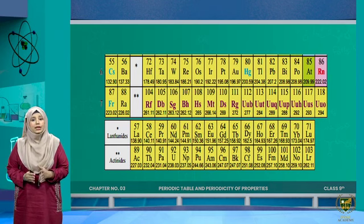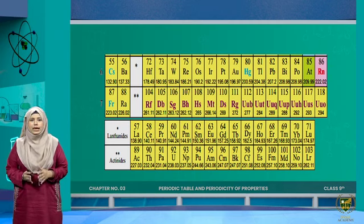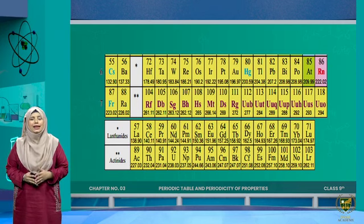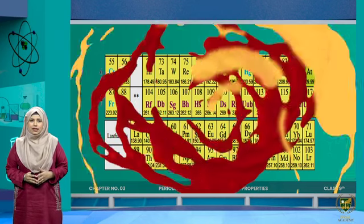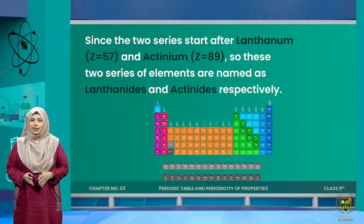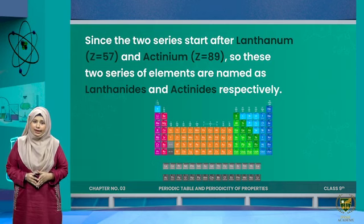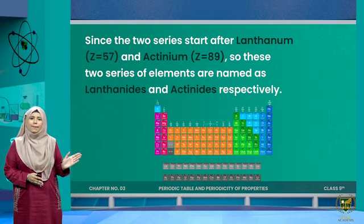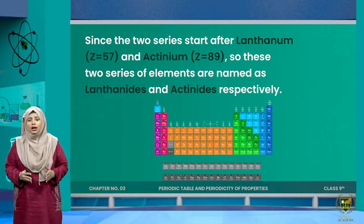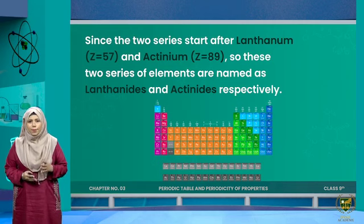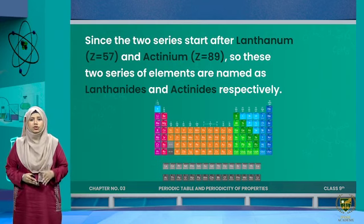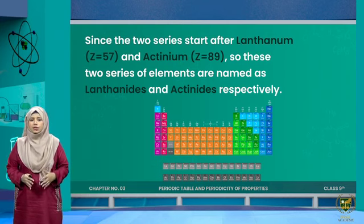The first row of the two extra lines belongs to period 6 and comes after atomic number 57. The second row belongs to period 7 and comes after atomic number 89. Space constraints required placing them below. The element at position 57 in period 6 is lanthanum, so the series after it is called lanthanides. The element at atomic number 89 in period 7 is actinium, so the series after it is called actinides. Lanthanides and actinides, and their relation to periods 6 and 7, are very important for exam purposes.